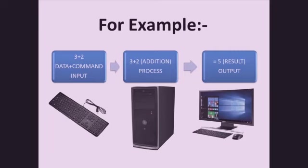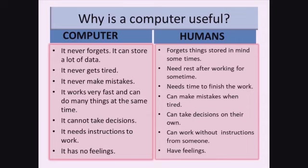We have studied the three basic steps of a computer: Input, Process, and Output. We learned how they work and which devices help in each step. Now let's take one example combining all three steps. We input 3 plus 2; the computer takes it as a command and processes it. The result after processing is 5 as output.